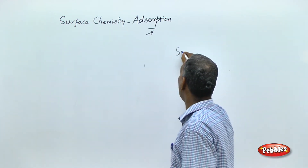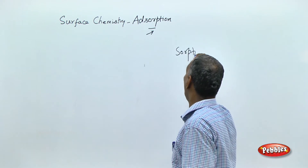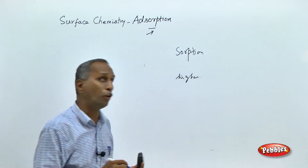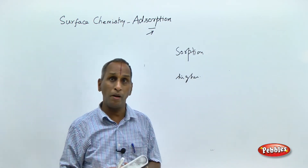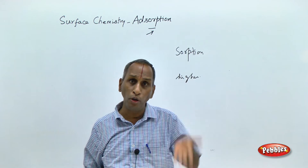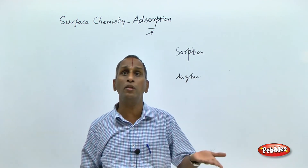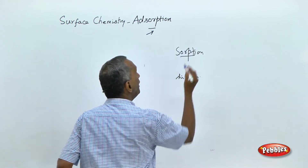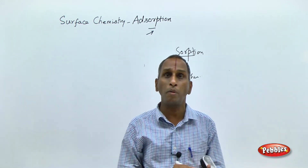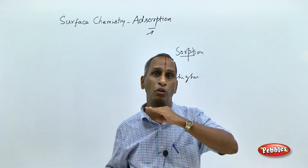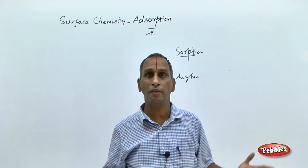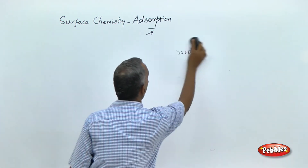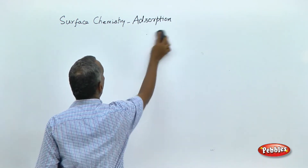Here we are dealing only with the surface phenomenon, that is, adsorption is only considered. Before that, if a particular system involves both — concentration both at the surface as well as the bulk — 50-50, in that case it is generally called sorption. Sorption is the uniform concentration everywhere, both at the surface and in the bulk. Now we are confined to our discussion only to adsorption.